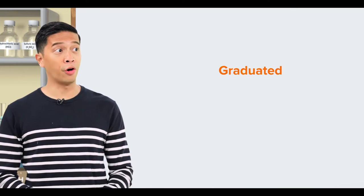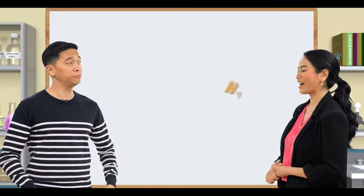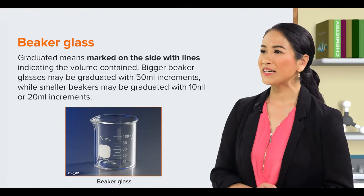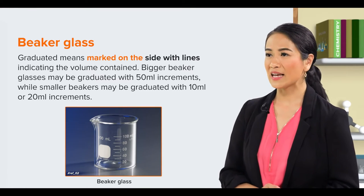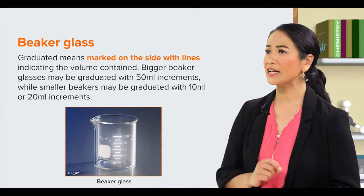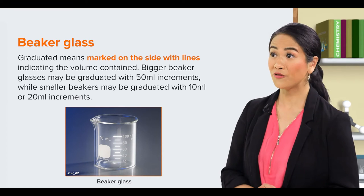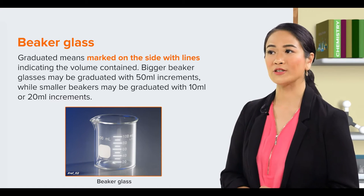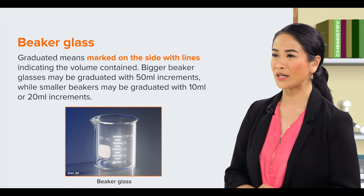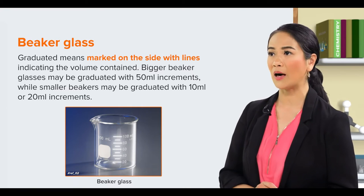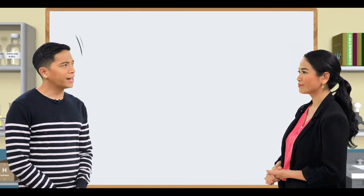Graduated? From beaker glass school? Haha, very funny. Graduated means that they are marked on the side with lines indicating the volume contained. Bigger beaker glasses may be graduated with 50 ml increments, while smaller beakers may be graduated with 10 or 20 ml increments. I see.